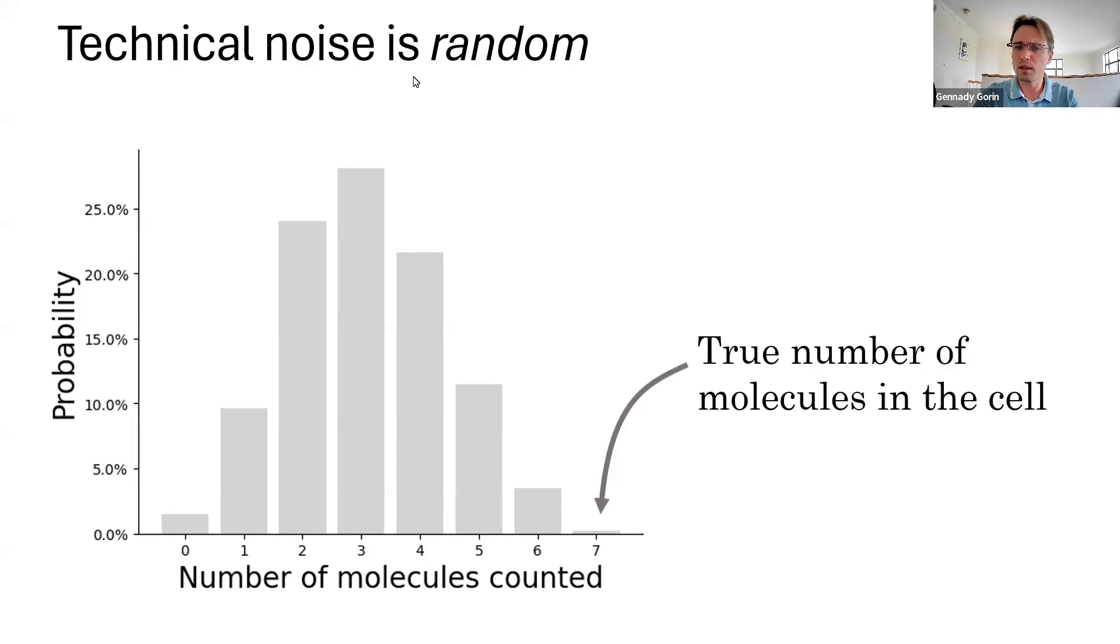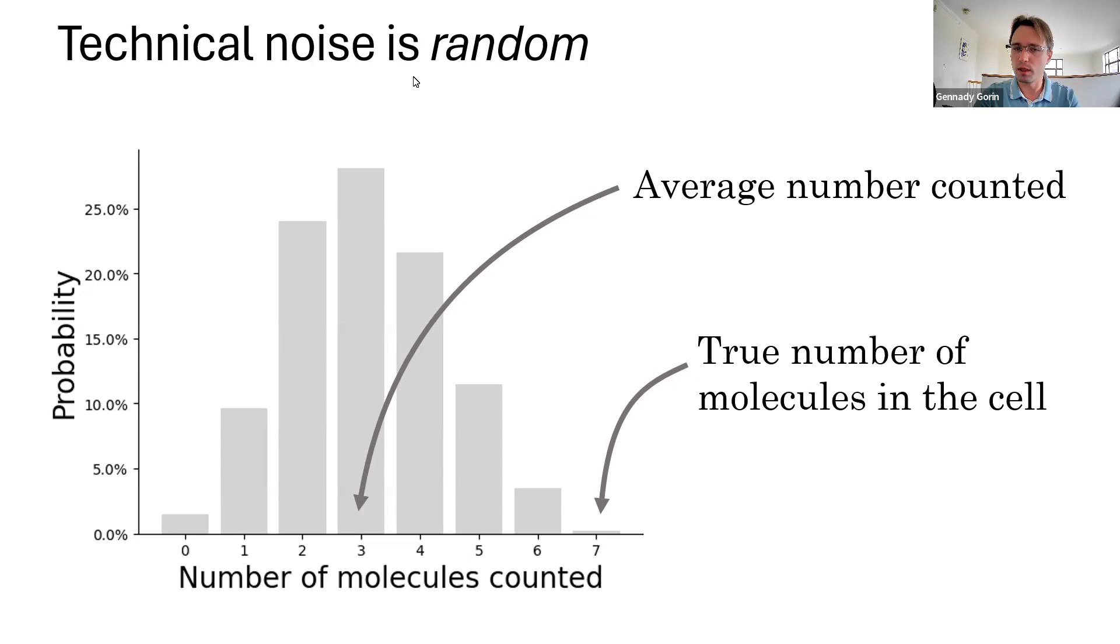Let's say we have seven molecules in a cell, as on the previous slide, and we pick up three on average. We can still get zero. We can still get seven or any number in between. And to formalize this, we need to think of the process in terms of probabilities. So, we introduce our first mathematical object, the probability of getting D molecules observed if there are really X molecules in the cell.